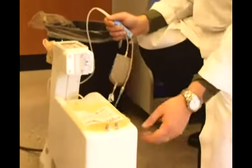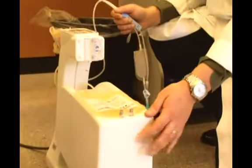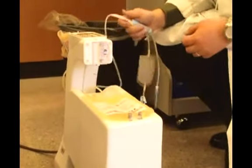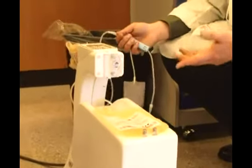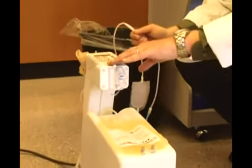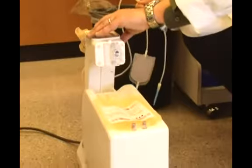So what this scale is going to do, it's going to rock back and forth. There's an anticoagulant in this bag that we want the donor's blood to mix with to make sure that there's no clots. So when we start, it rocks back and forth like this.